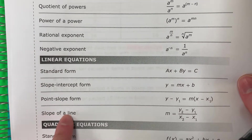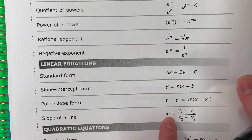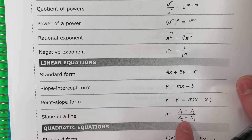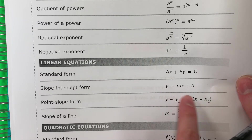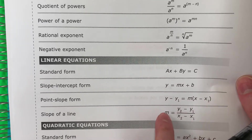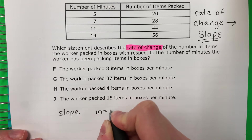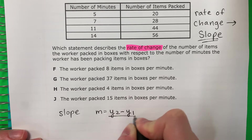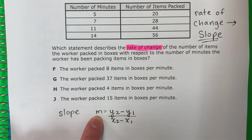You will need the slope of a line formula. Esta formula, slope of a line. M equals y2 minus y1 divided by x2 minus x1. This is the one that we're going to need. We're going to go ahead and copy it. M equals y2 minus y1 divided by x2 minus x1.